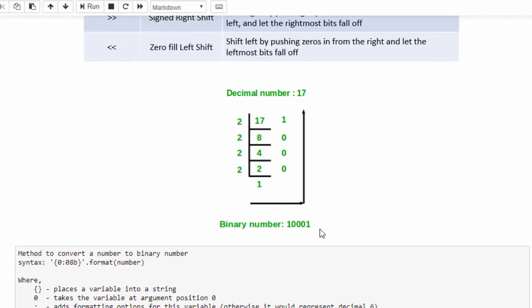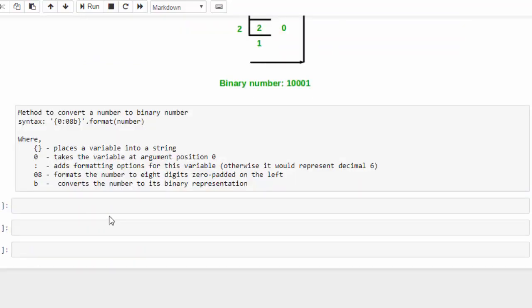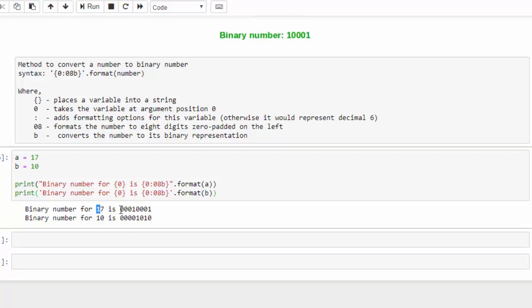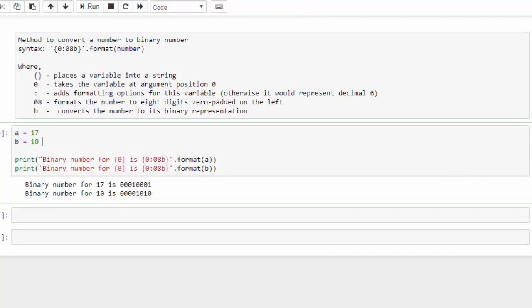Bitwise operator: first we have to convert the decimal numbers to the binary numbers and then do the comparison. You don't need to do this every time because we have a readily available method. What you have to do is, just for example, a equal to 17 and b equal to 10. The syntax is here: 0 8 B. This will convert to the binary of 8 digit number. Now I will run and show it. See here, the 17 is converted to binary number of 8 digits. This is equivalent to here: 10001. And for 10 it is 00001010. So the first concept, how to convert the numbers to binary, is completed.